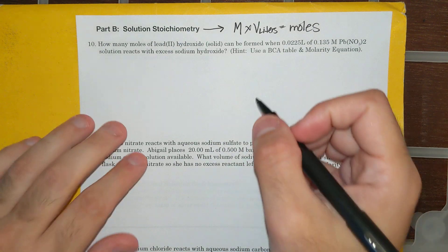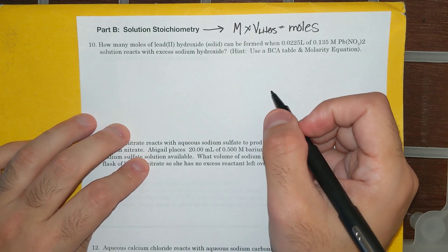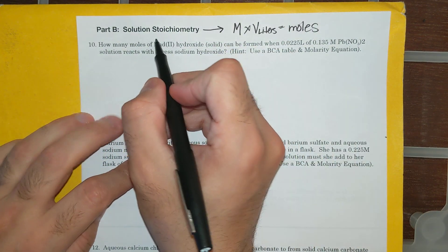So let's look at number 10. I'm starting with number 10 because it doesn't give you all of the reactants and products, so I'm going to try and help you piece it together.